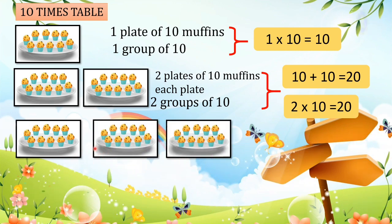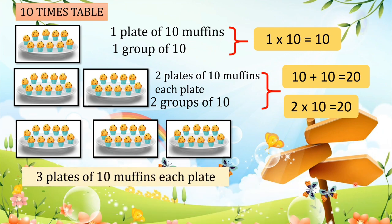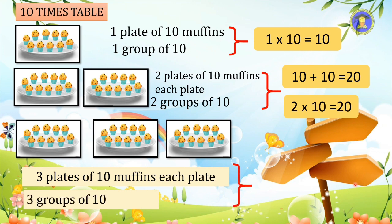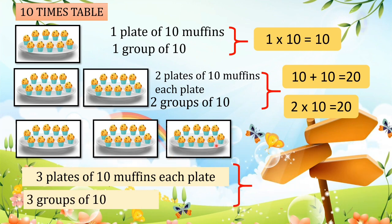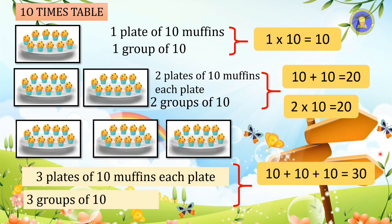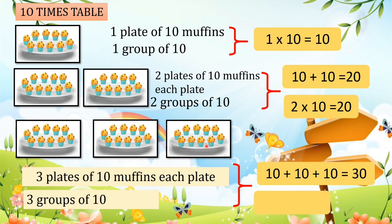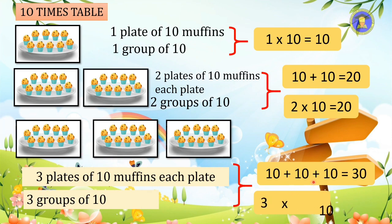The next one: there are three plates of ten muffins in each plate. We can say we have three groups of ten. We can find the total by repeated addition: ten plus ten plus ten equals thirty. So three times ten equals thirty.